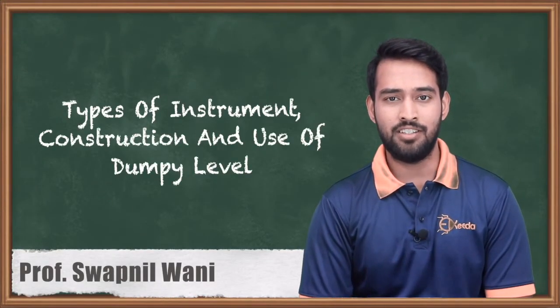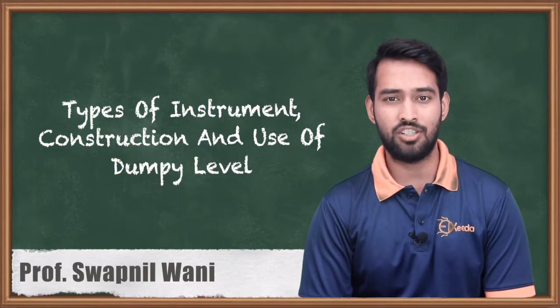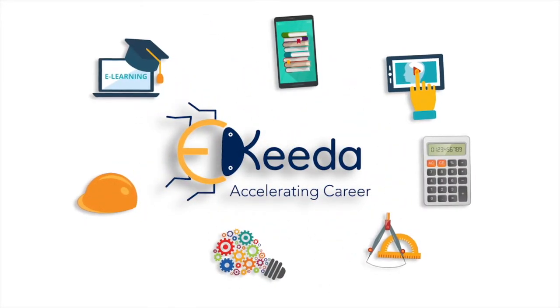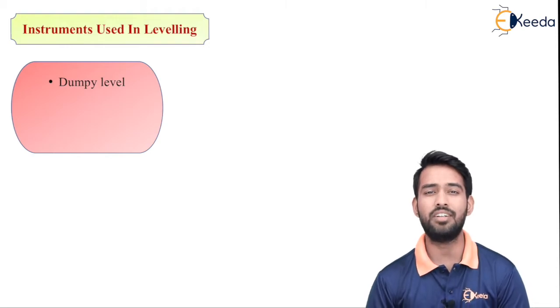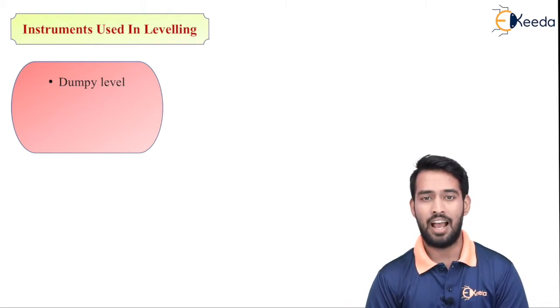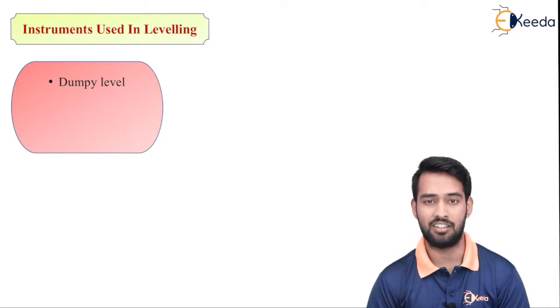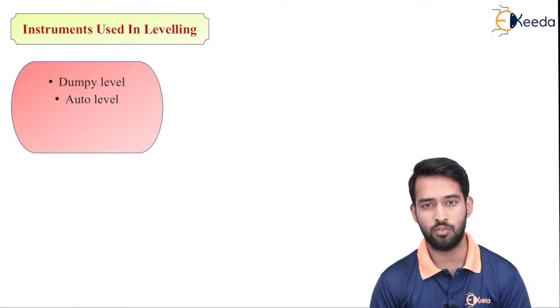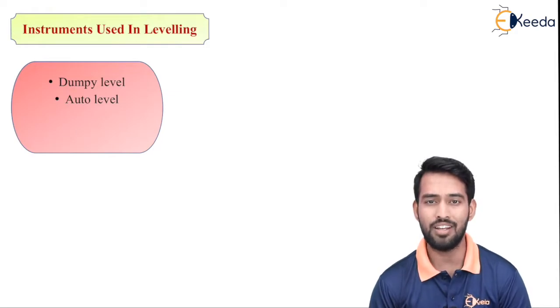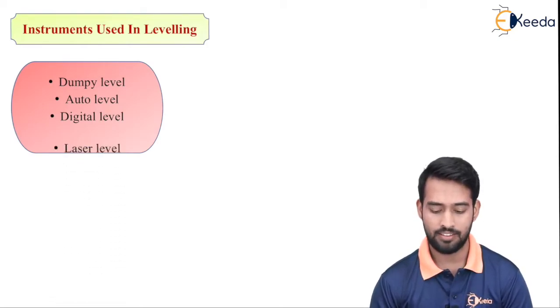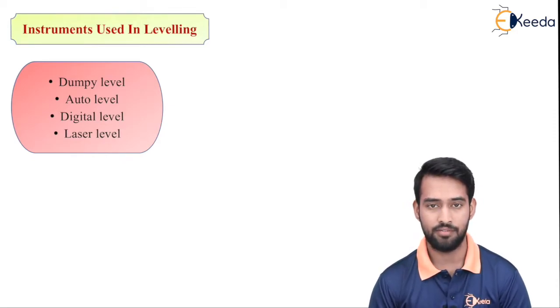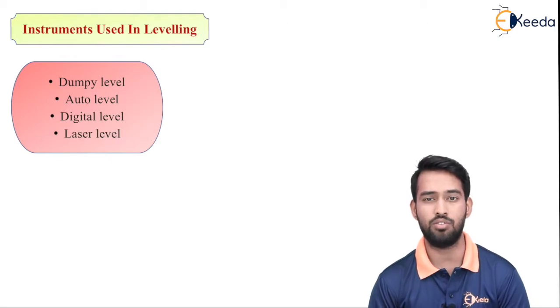Today's topic is instruments used in leveling, and the construction and use of dumpy level. We will be discussing the types of leveling instruments. The very first type is dumpy level. We use different types of instruments for leveling purposes — for finding out heights of any point above and below the surface of the earth. There are four leveling instruments: dumpy level, auto level, digital level, and laser level. Dumpy level is basically a traditional instrument used for leveling operations.